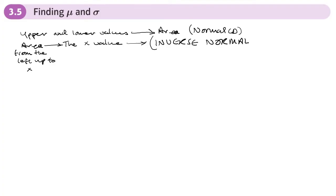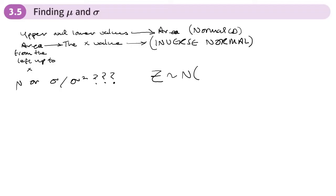Now what if we've got a question where what we're trying to find is the mean, the standard deviation, or even the variance? How do we do those types of questions? Well, there isn't an option on the calculator to do that. So we're going to have to use the standardized normal distribution. With the standard normal distribution Z, we know the mean is zero and the variance is one squared — we know those things.